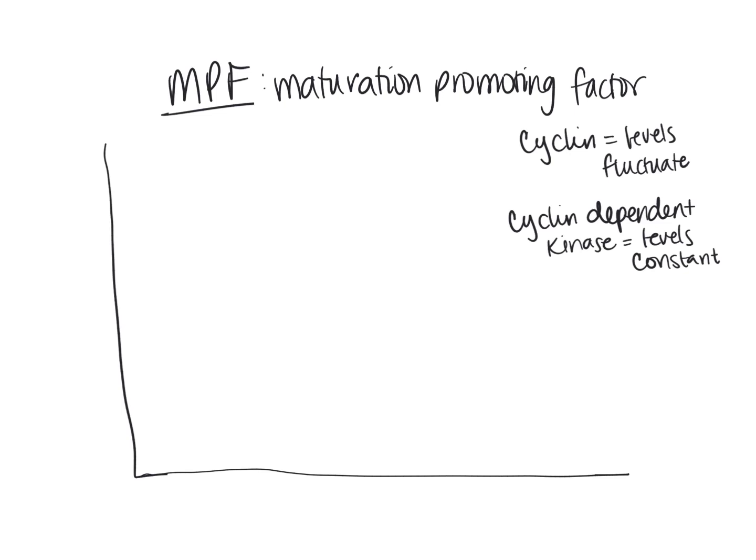Let's see how these levels fluctuate throughout the course of the cell cycle. On this graph, the independent axis shows the different stages of the cell cycle, and the y-axis, or dependent variable, represents a generic amount.